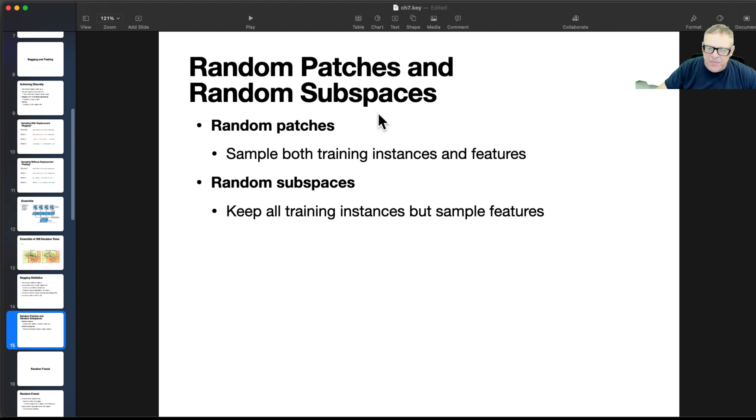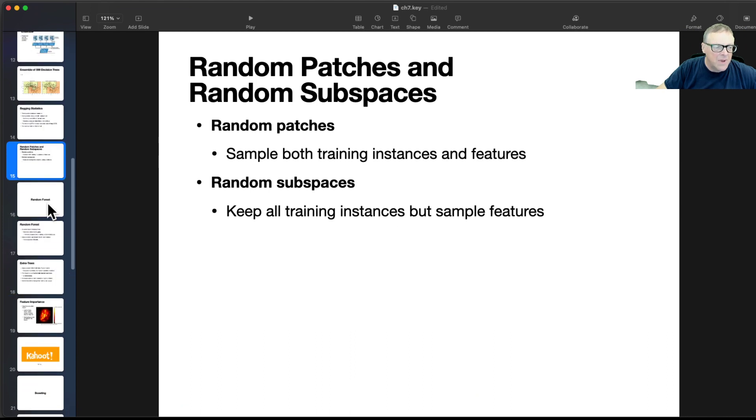All right. So random patches, you sample both training instances and features. Remember, the features are the properties of the instances, and if you have data coming in like an image, it might have a whole lot of data points, like even those little numbers we had were 28 by 28 pixels, so they had 784 features in each one. So rather than taking the complete list of features for every instance you're using, you could sample the training instances and also sample only some of the features, or you could keep all training instances but only sample the features. These are various ways to do it.